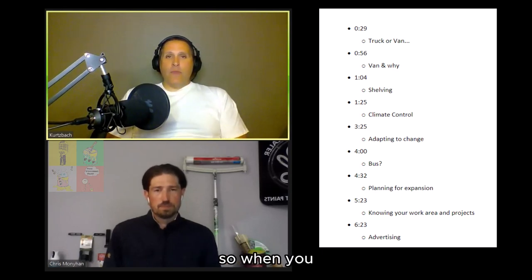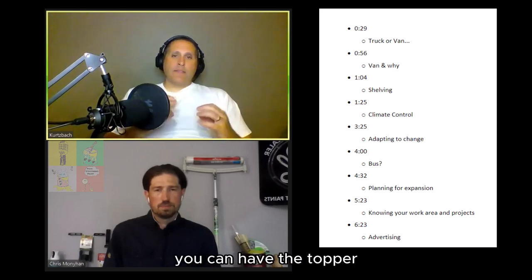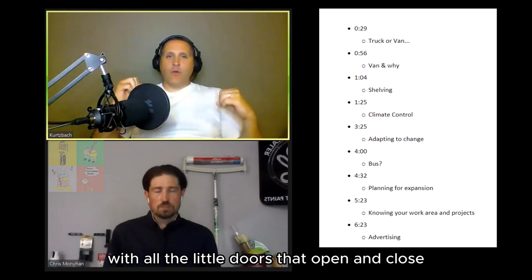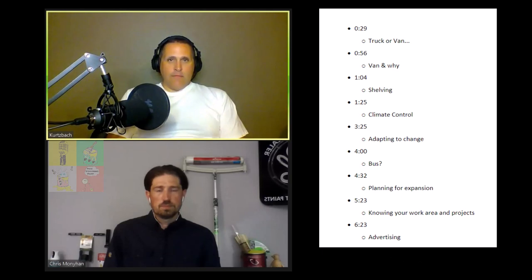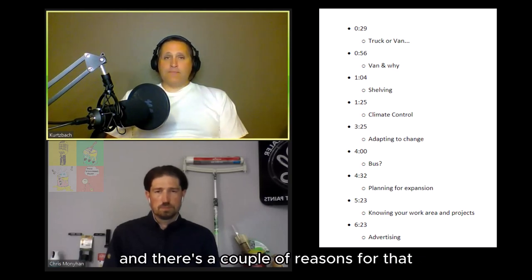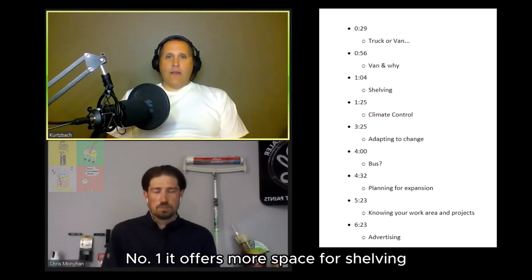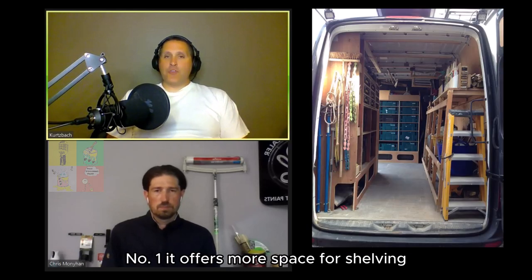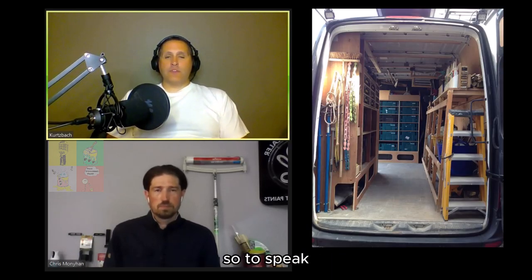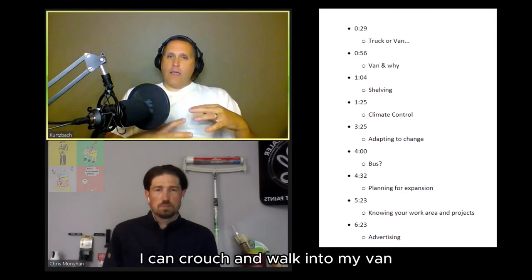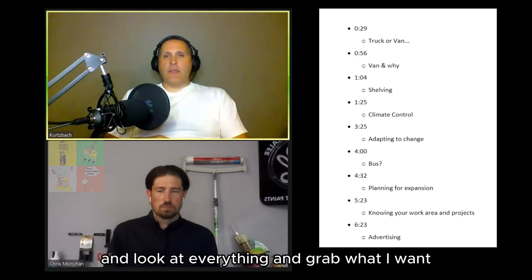When you think about accessibility, granted you can have a truck with a topper with all little doors that open and close. But for me, I choose a van. And there's a couple of reasons for that. Number one, it offers more space for shelving because you can have shelves from floor to ceiling. I can crouch and walk into my van and look at everything and grab what I want.